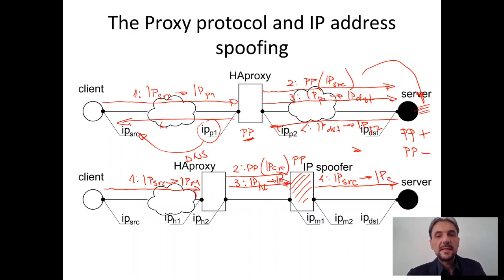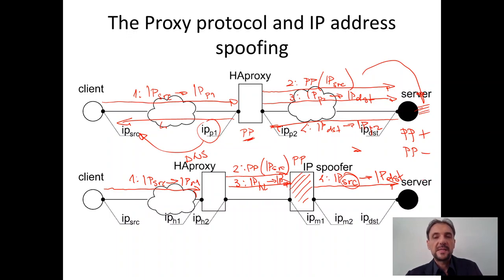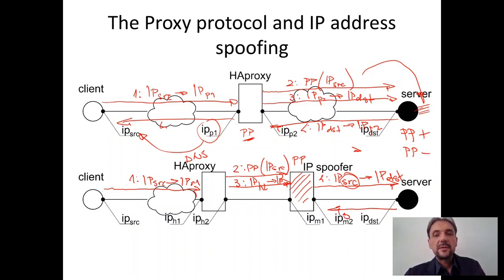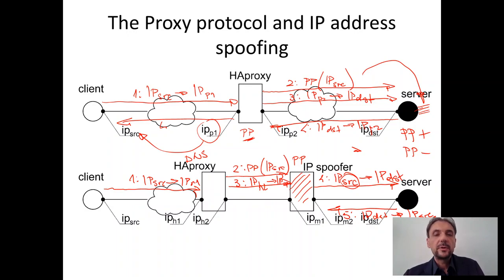The server sees the actual address of the client, so from the server's perspective it is communicating with the actual client and all features can be retained. The tricky part is when the server responds: it responds from its own IP address but the destination address in its response is the IP address of the client. That cannot work because the client is on a different network and the communication is spoofed in between. So in order to maintain the communication, the spoofer must intercept that communication — and regardless of the fact that the packet is not destined for the IP spoofer, the spoofer should intercept the packet.